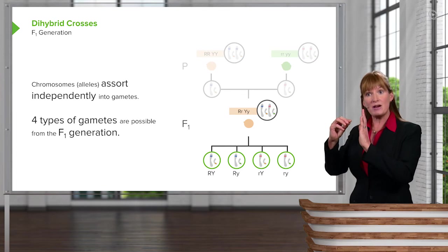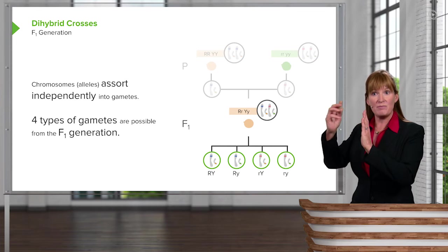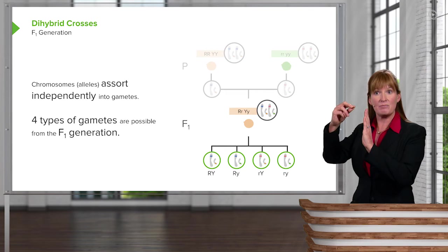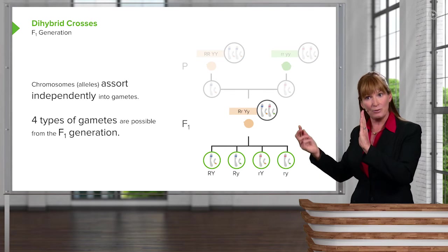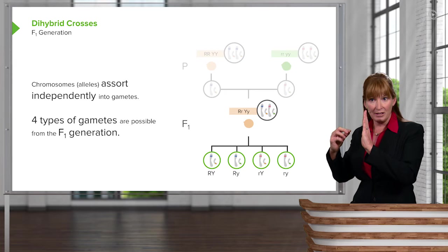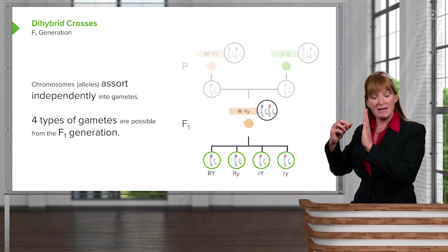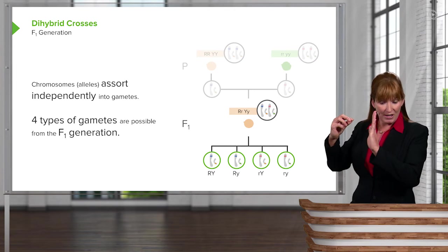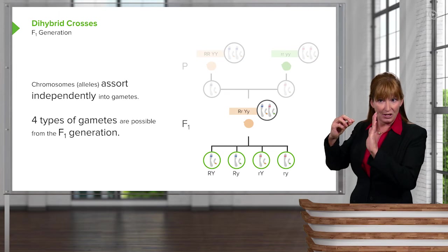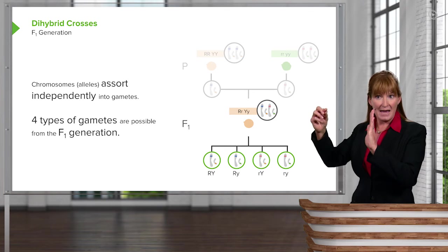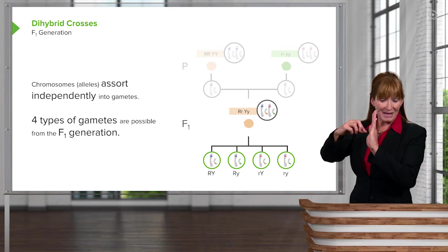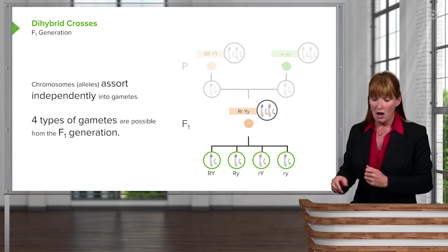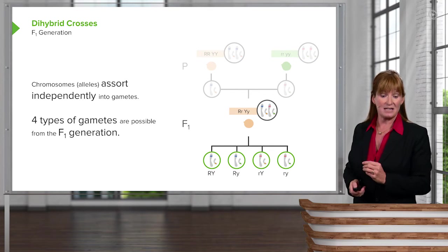So we'll take the big R and distribute it with the big Y. So the first gamete is big R, big Y. And then we can take the big R and stick it with the little y. So we have a big R, little y. And then we can distribute the Y, I mean the R gametes. So we have a little r gamete to the big Y and then the little r gamete to the little y. And that's how we'll come up with four gametes that are distinct from each other.